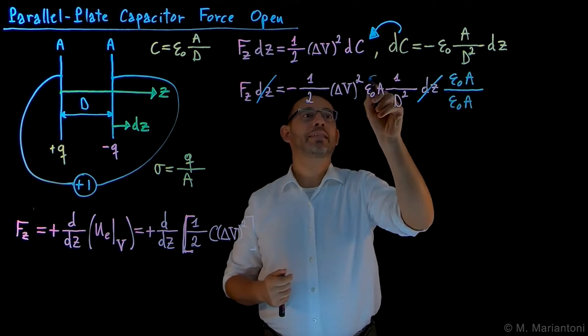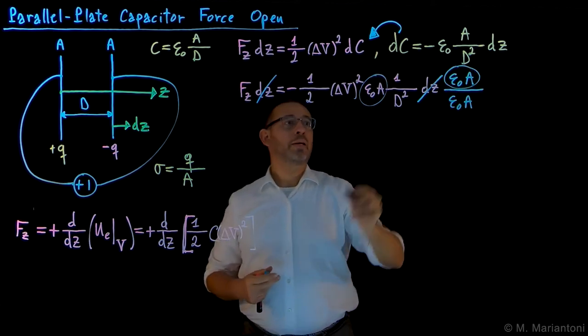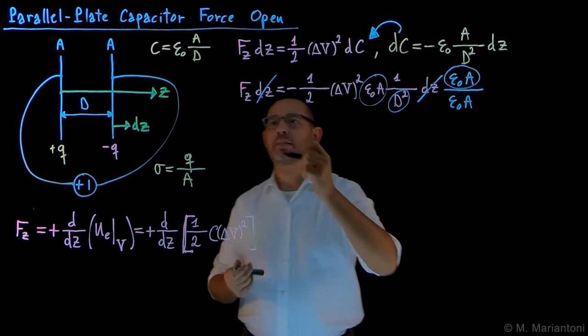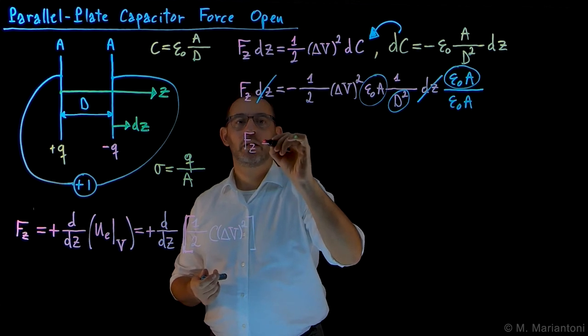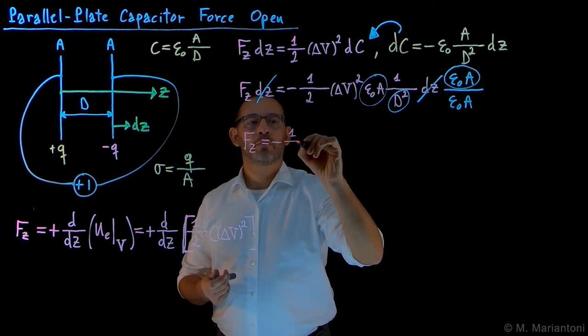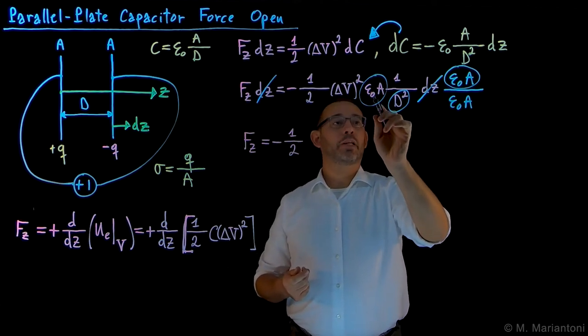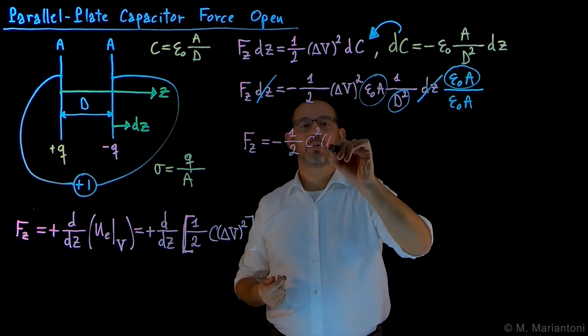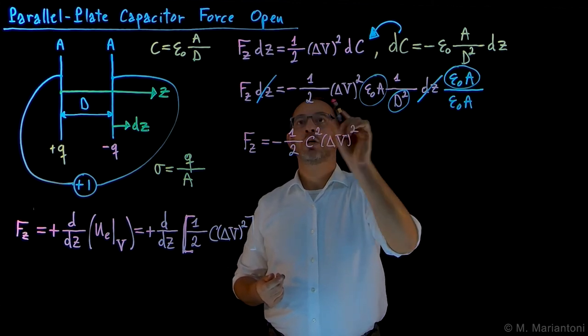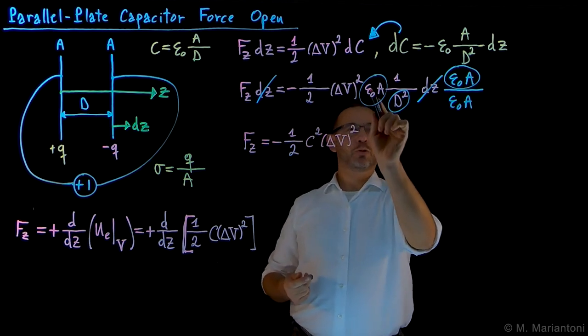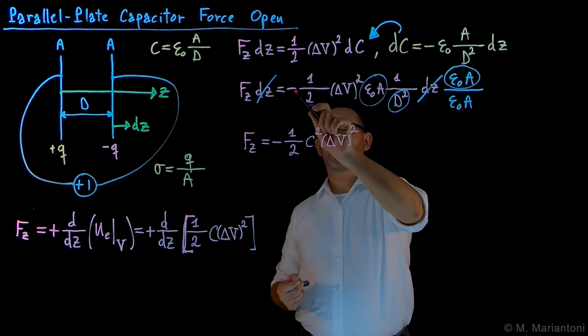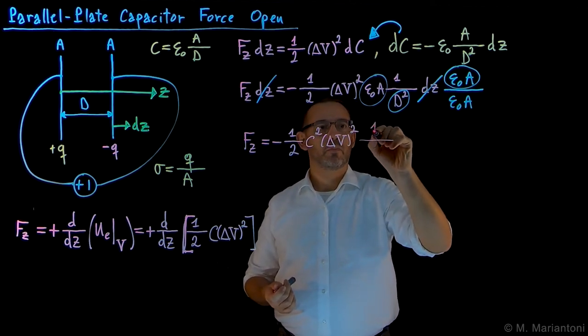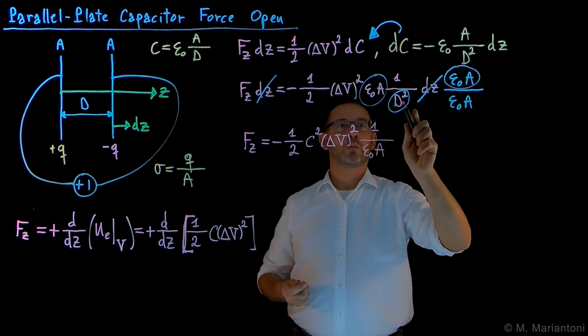What we want to do next, we want to multiply and divide by epsilon naught A. By multiplying and dividing by epsilon A, this gives us an epsilon naught A squared divided by D squared. What is that? Epsilon naught A squared divided by D squared is nothing but C squared. So we can rewrite this as F_z equal minus one half - all this quantity epsilon naught A times epsilon naught A divided by D squared is actually C squared, times delta V quantity squared. Then we have divided by epsilon naught A.